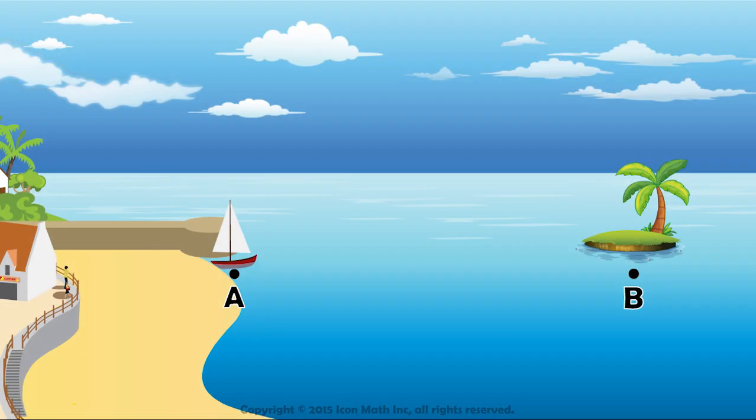If we look at the following image, we have an island represented by point B and a boat anchored at the port and located at point A.